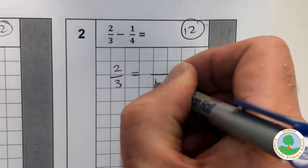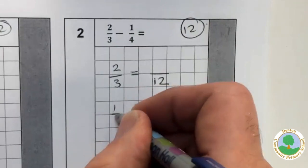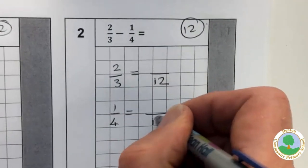So I'm going to convert exactly as I did before. Two thirds, find out how many twelfths that is. And a quarter, find out how many twelfths that is.